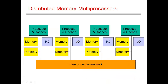When we left off last time, P3 had just done a write of x. There's a copy of x in modified state, and the directory believes the block is modified with node 3. Now let's walk through a few more examples and different cases.